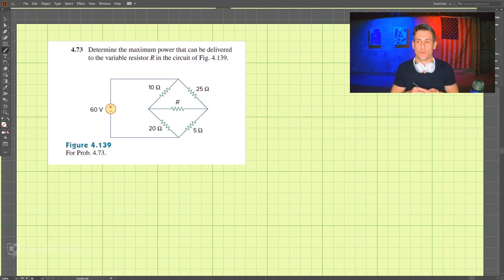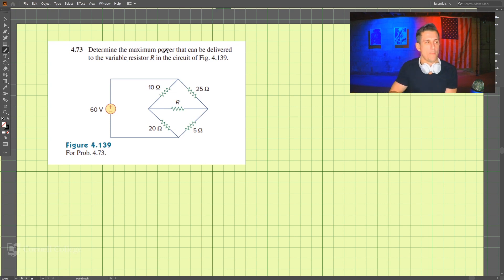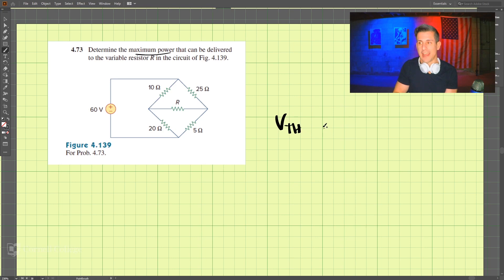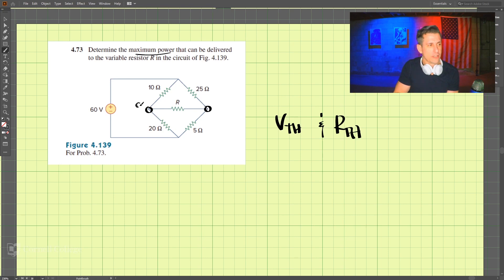This is problem 473 and we are looking to determine the maximum power that can be delivered through resistor R. We want the max power through R, and since this is a maximum power problem, we need to find the Thevenin voltage and the Thevenin resistance. We have terminals A and B.